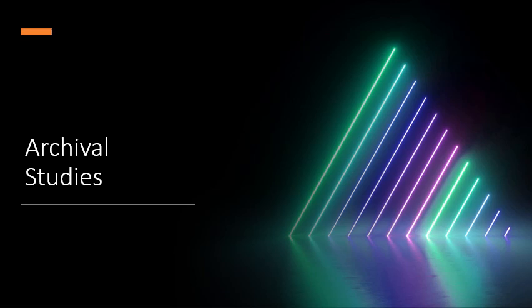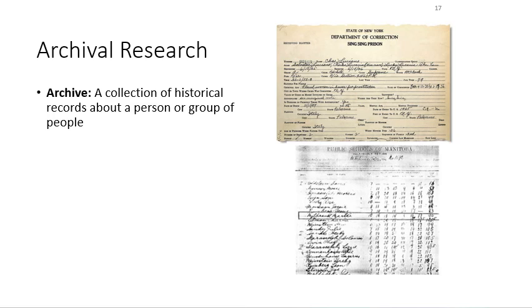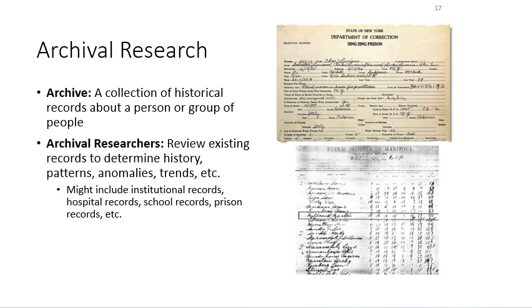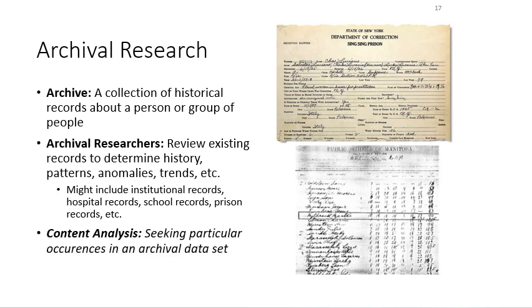Archival research is our next method. An archive is a collection of historical records about a person or group of people. You can access old immigration records, prison records, tax records, or health records. Archival researchers review these records to look at historical patterns, anomalies, and trends. The data can be qualitative — like old diaries — or quantitative, such as data from twin studies from the past. All of the observational types described so far are considered descriptive methods.